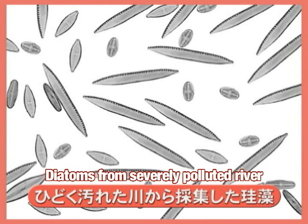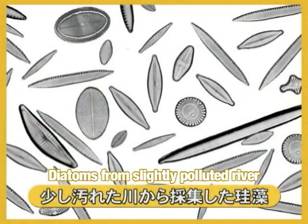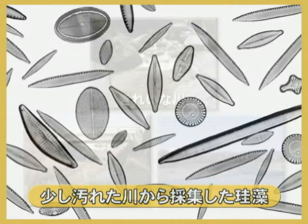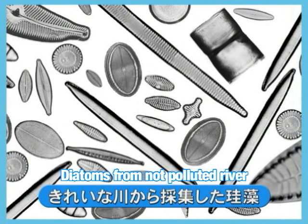There are many diatoms of the same shape in the severely polluted water. In the slightly polluted river water, oval-shaped, crescent-shaped, and other shapes of diatoms are present. And finally, the clean water diatoms — in this water exist diatoms of various sizes and shapes, and it is easy to see that many different species of diatoms live here.